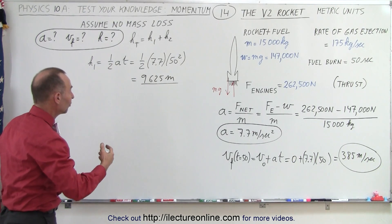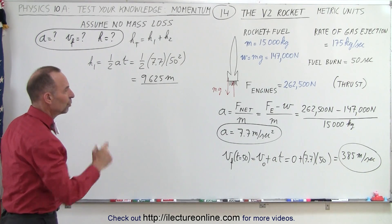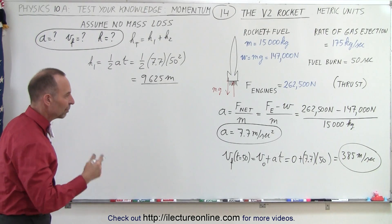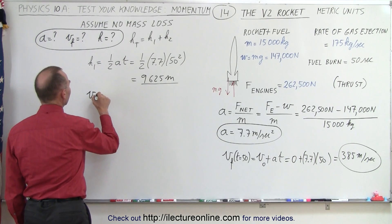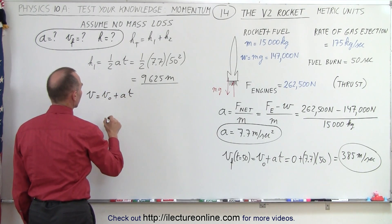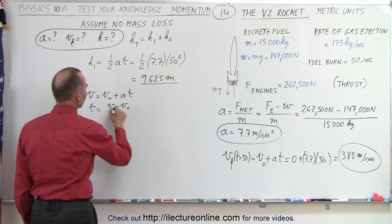Now the next height is found to see how much higher it will go at that point. So at that point, it's moving at 385 meters per second. So how many seconds will it be in the air before it reaches its maximum height? So we can say that V final equals V initial plus A times T. That means that T is equal to V final minus V initial divided by A.